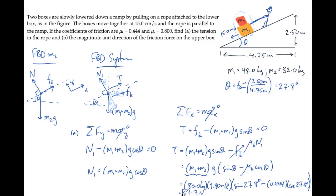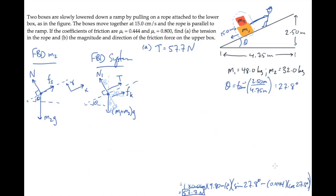Now let me move this result up here so we can erase all of this and make room to solve part b. In part b, we're asked to find the magnitude and direction of the friction force on the upper box, the box of mass m2.